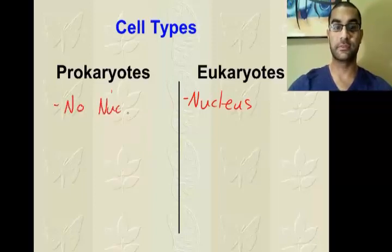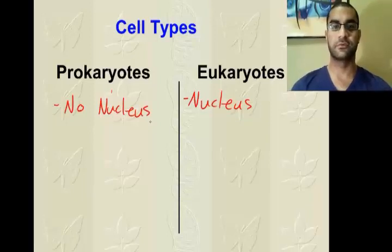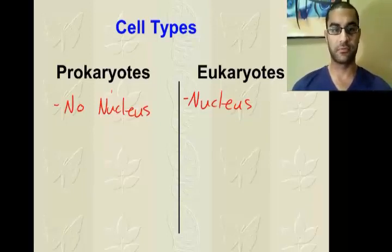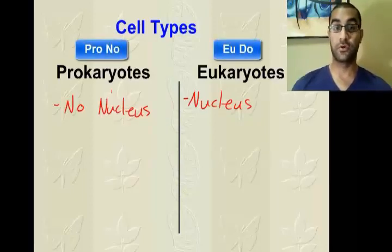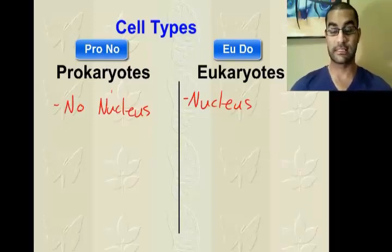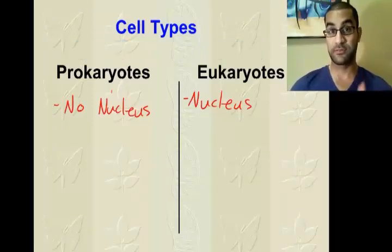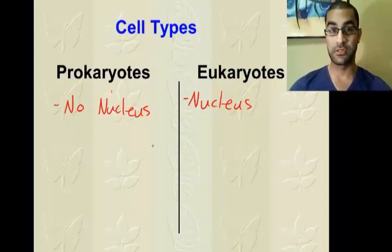One way to remember: 'pro-no, you do.' Prokaryotes have no nucleus; eukaryotes do have a nucleus. That's probably the thing you'll get quizzed or tested on the most, so make sure you know the difference between them.